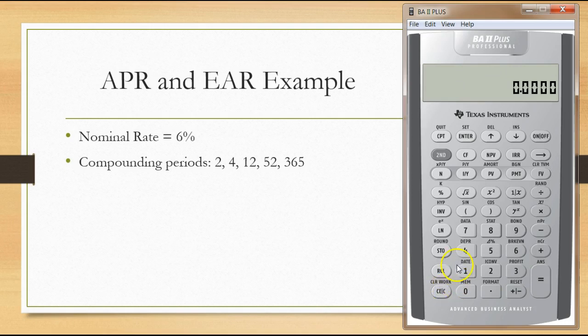Let's go back to the example. To convert annual percentage rates to effective rates, we use the Second I CONV function. When you press that, you'll see NOM - this is the nominal rate. We'll enter 6 percent for our example and hit Enter.